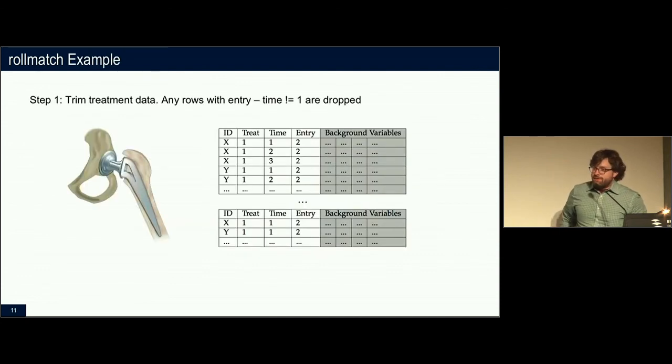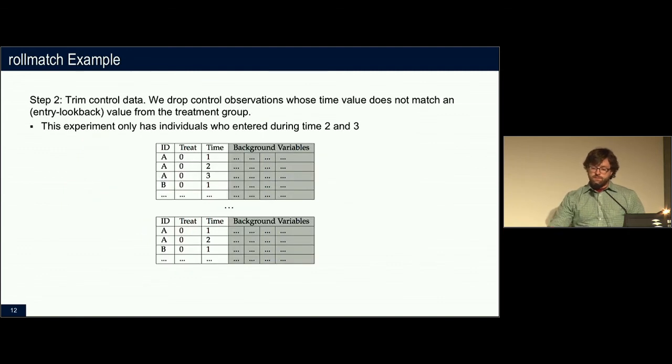So the first step is we have this panel data set of treatment data. What it looks like is just the treatment variable saying yes, they were treated, some time variable saying when it was collected, and an entry variable saying the time that they actually entered into the study. And we're just going to quickly trim that down based on that look back variable that you said. I'm only going to look at information that's one time period back from when they entered.